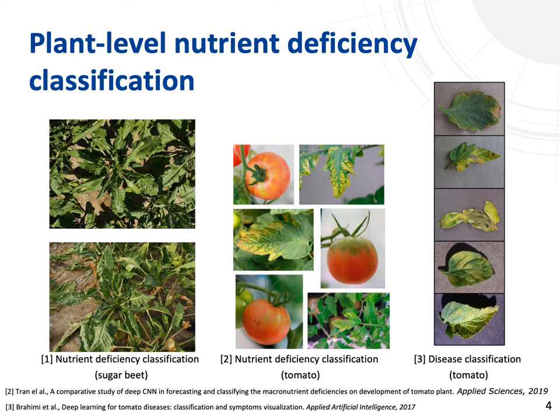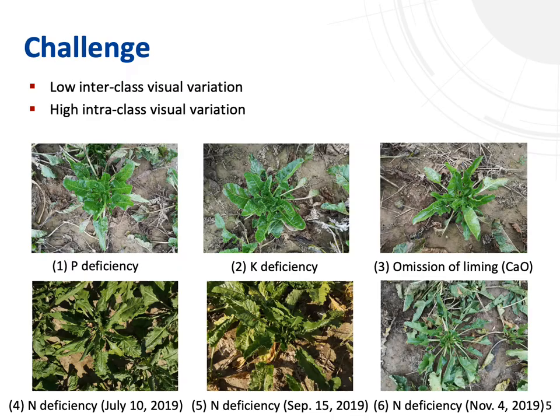For nutrient deficiency and disease detection in crops like tomato, the symptoms are easily observed in the leaves. However, local patterns are usually recognized as nitrogen deficiency, as it is prevalent in many agricultural systems. We argue that the global context in plants, instead of the local symptoms in a single leaf, are essential for better classification results. Besides, symptoms of nutrient deficiencies visible to human eyes often appear when plants are already severely damaged.